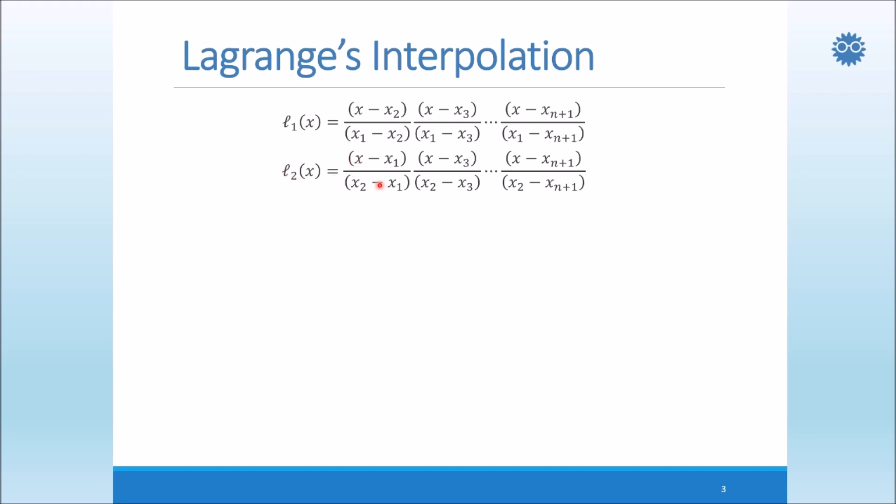For example, in l sub 2, we have x minus x1 over x2 minus x1. But as we see, we don't have the term x minus x2 over x2 minus x2, as I mentioned earlier. So this trend will go until we approach the last term, which is x sub n plus 1. And we notice here, the final point, we don't have the term which x sub n plus 1 is subtracted, but we stop at the term before.